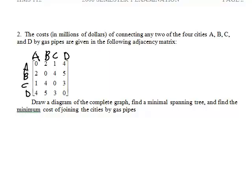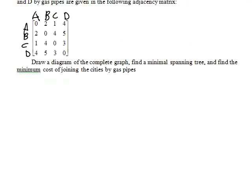And we're wanting to draw a diagram of the complete graph firstly. Now by a complete graph we're wanting a graph that shows the connections between all of those cities. And having a look at this you can see first of all that the cost of joining city A to city B is two million dollars. So we draw a line from A to B and that has a two.